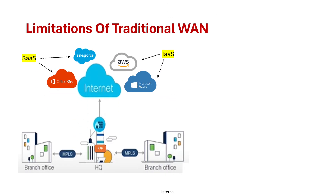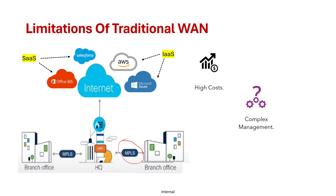Because of this, they create inefficiencies and multiple challenges for enterprises. One of the big challenges is high cost — traditional WANs rely heavily on MPLS circuits for secure and reliable connectivity, and bandwidth costs are very high, especially when planning to upgrade circuits or add more branches.